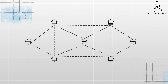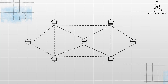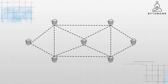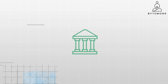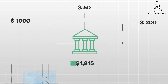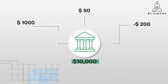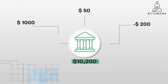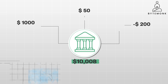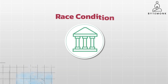Imagine a distributed system where your application runs on multiple machines or nodes. For example, a banking system where multiple transactions might try to update the same account balance simultaneously. When multiple transactions or nodes try to modify the same data simultaneously, the final outcome can be unpredictable and depend on the timing and order of operations. This can result in data corruption, inconsistencies, or incorrect calculations. This is known as a race condition.